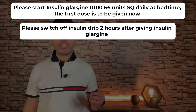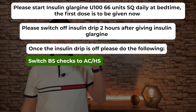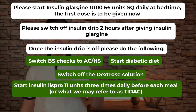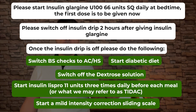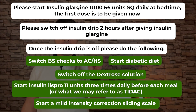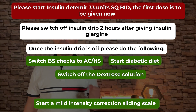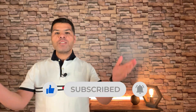A sample transition order would read: Start insulin glargine U100 66 units subcutaneously daily at bedtime — first dose to be given now. Switch off insulin drip two hours after giving insulin glargine. Once the drip is off: switch blood sugar checks to AC and HS, start diabetic diet, switch off dextrose solution, start insulin lispro 11 units three times daily before each meal (TID AC), and start a mild-intensity correction sliding scale. If the patient is NPO or oral intake may not be reliable, omit the scheduled pre-meal insulin. If insulin detemir is used instead of glargine, the order would be insulin detemir 33 units subcutaneously BID, first dose now. In the next video we will apply what we have learned to real-world clinical examples.